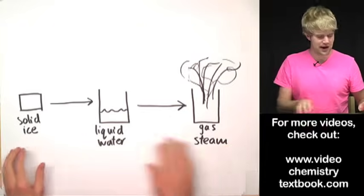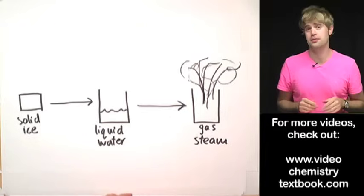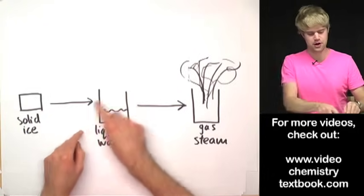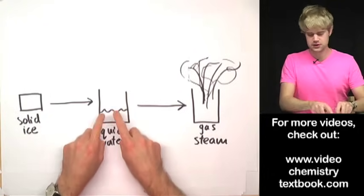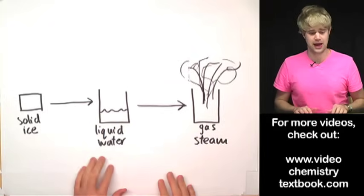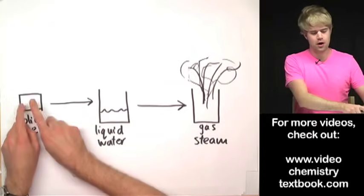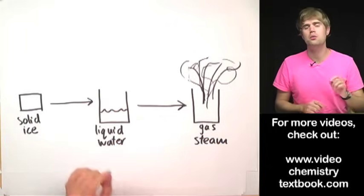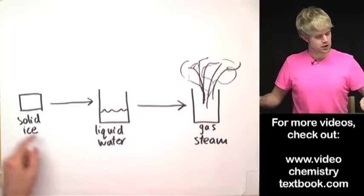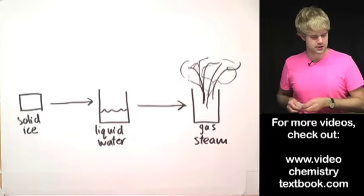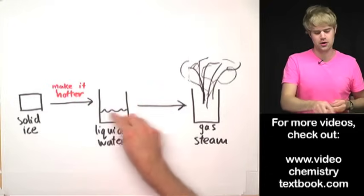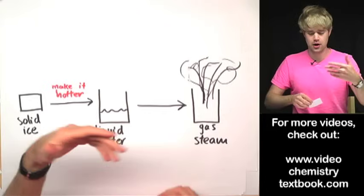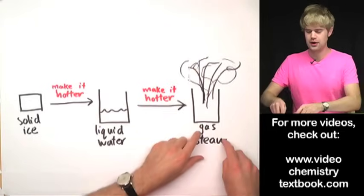In this diagram here I have some phase changes that are very familiar from daily life. I have some solid ice, a big hunk of solid ice melting to become liquid water, and then I have this liquid water boiling to become steam, which is a gas. So are these phase changes endothermic or exothermic? Let's think about what we have to do with heat to make them happen. I've got to make the solid ice hotter to get liquid water, and then I've got to make that liquid water hotter and hotter in order to end up with steam.